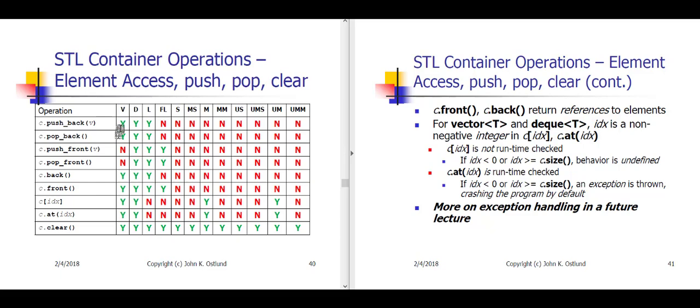Push back is efficient for vectors, decks, and lists, but not for forward lists. And it shouldn't be any big surprise that pop back, which takes the backmost element from the container, is also efficient for vector, deck, and list.